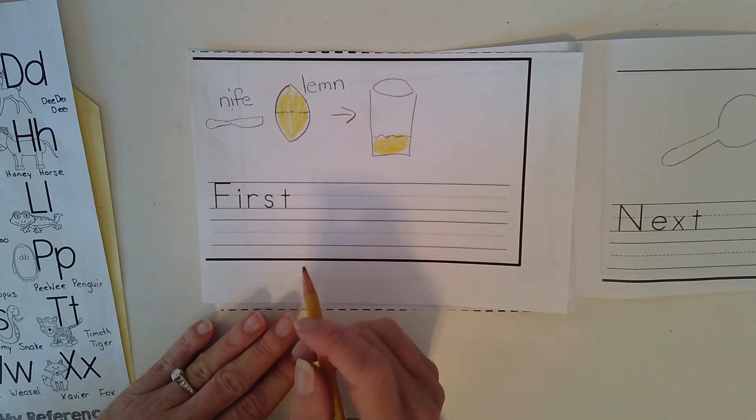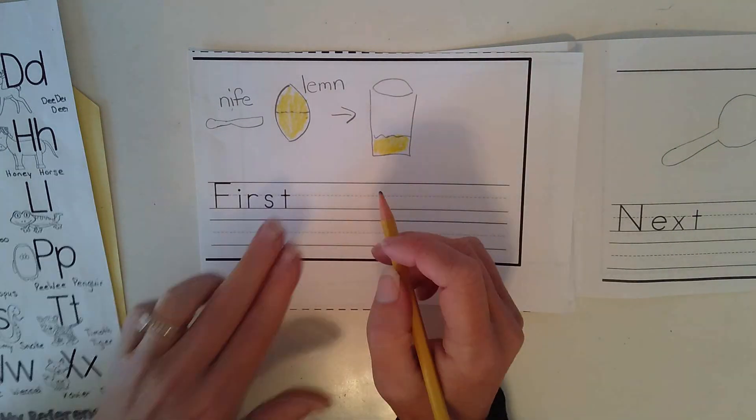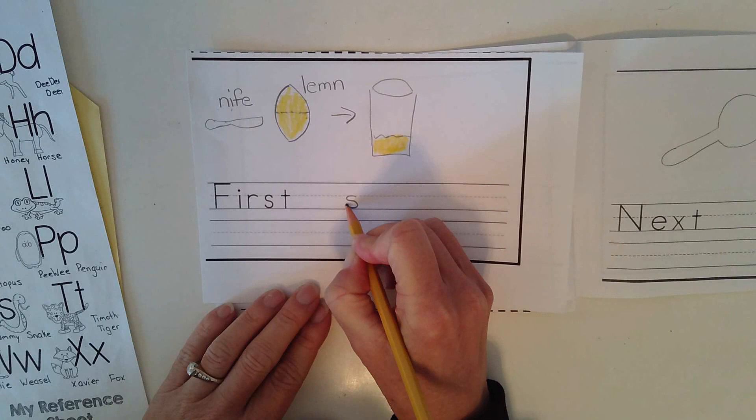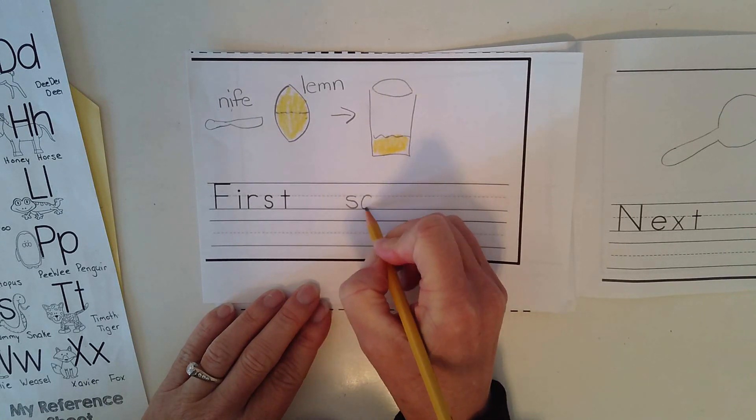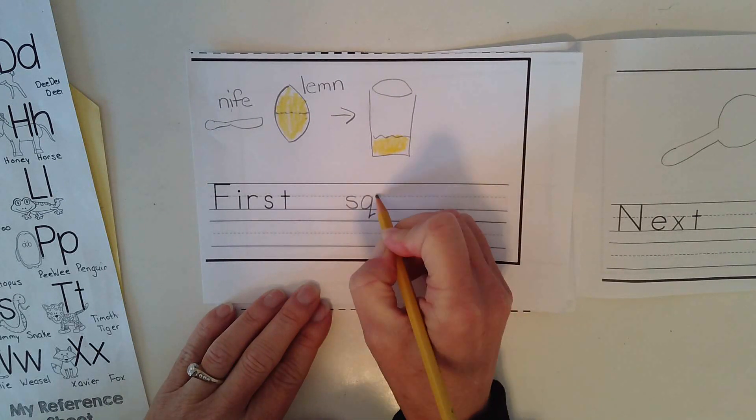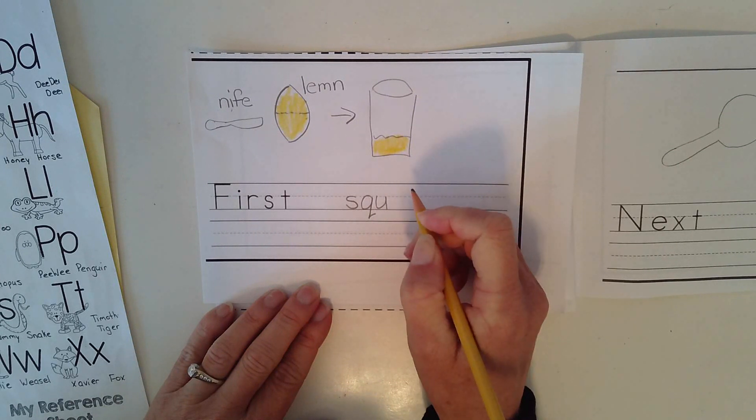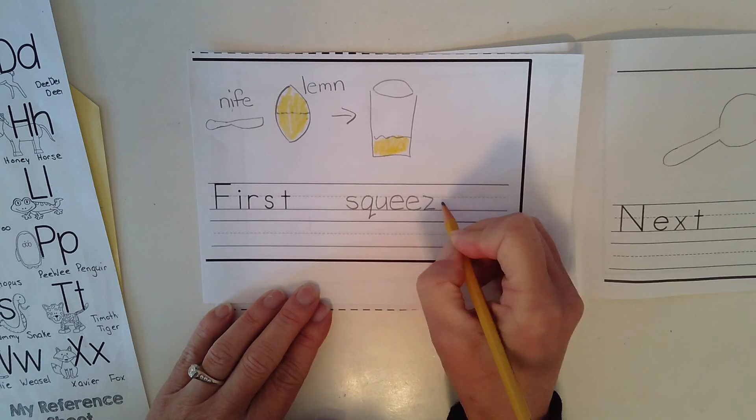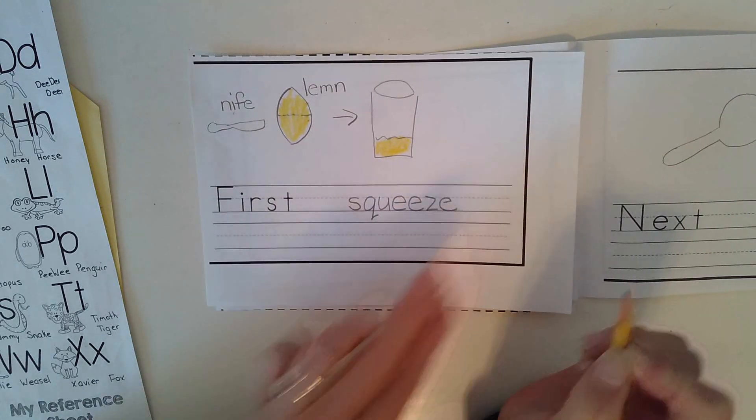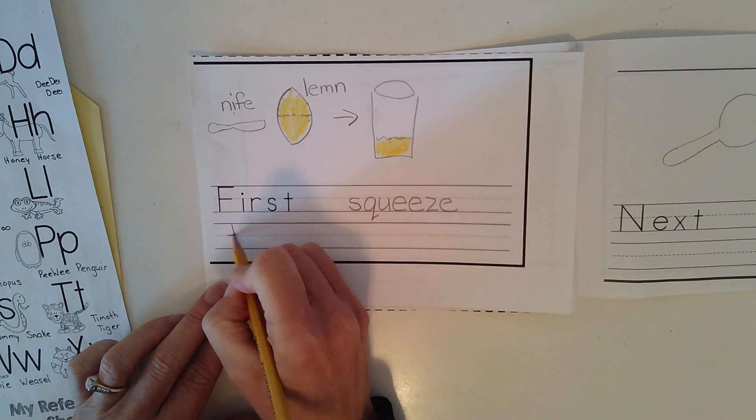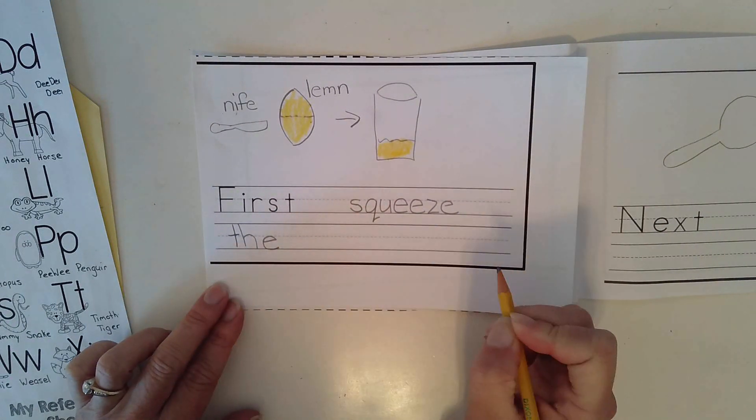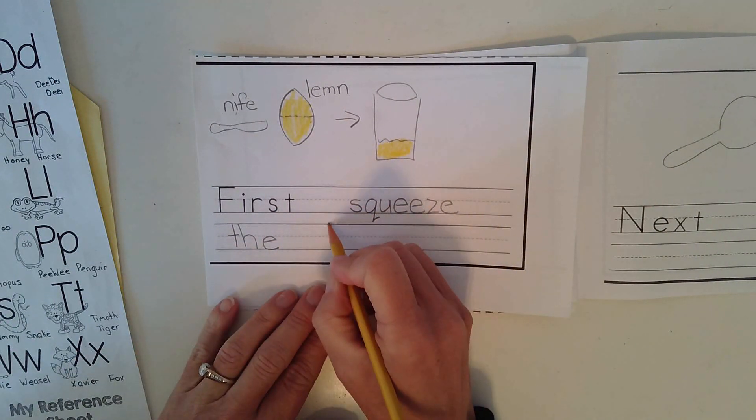First, squeeze the lemon. So I'm going to leave a finger space, and I'm going to start the word squah. Squah. I hear a queenie quail in there. Squah. E. Z. Finger space. The is a snap word. I know how to spell the. Lemon. Finger space. O. M.